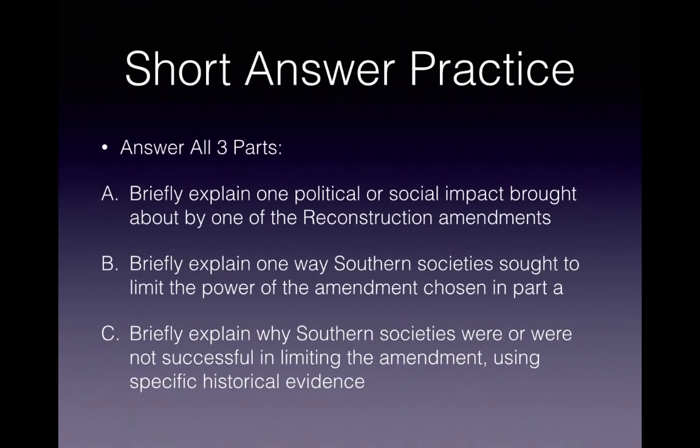Short answer practice for you — answer all three parts. Briefly explain one political or social impact brought about by one of the Reconstruction Amendments. Briefly explain one way Southern society sought to limit the power of the amendment chosen in Part A. And for Part C, briefly explain whether Southern societies were or were not successful in limiting the amendment using specific historical evidence.